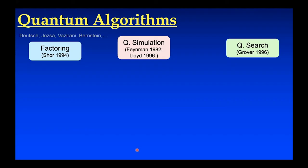I'd like to frame this in terms of the history of algorithms. Our three main pillars of quantum algorithms are factoring, simulation, and search. These built on earlier work pioneered by David Deutsch, Richard Jozsa, Vazirani, and Bernstein. But these are the models we use today: factoring from Peter Shor, quantum simulation from Seth Lloyd and earlier Richard Feynman's ideas, and Lov Grover's quantum search. They're very different in many ways.